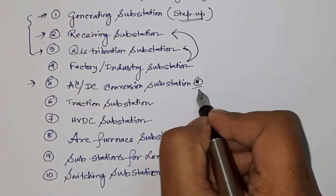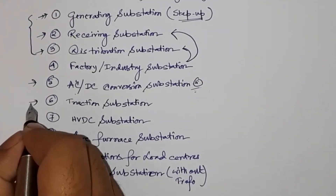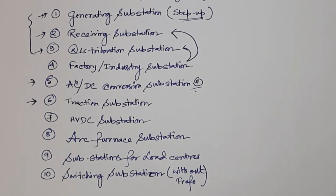Then there is the traction substation, used for the railway system. It is generally a single-phase type substation operating at 25 kV, or it may be a 1500 V or 750 V DC substation.